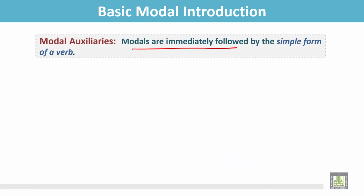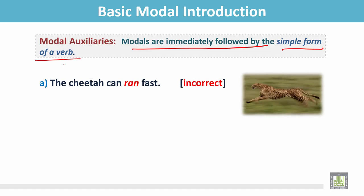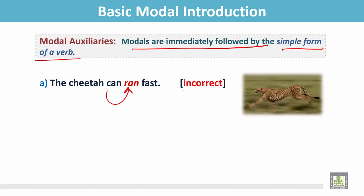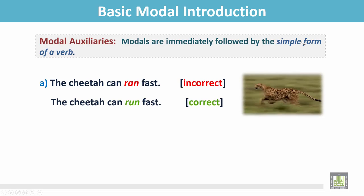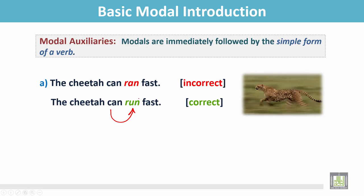Modals are immediately followed by the simple form of a verb. See the example: 'The cheetah can ran fast.' In this sentence, after the modal the verb is in the past form, so the sentence is incorrect. The correct sentence is 'The cheetah can run fast,' where after the modal the verb is in the simple form.